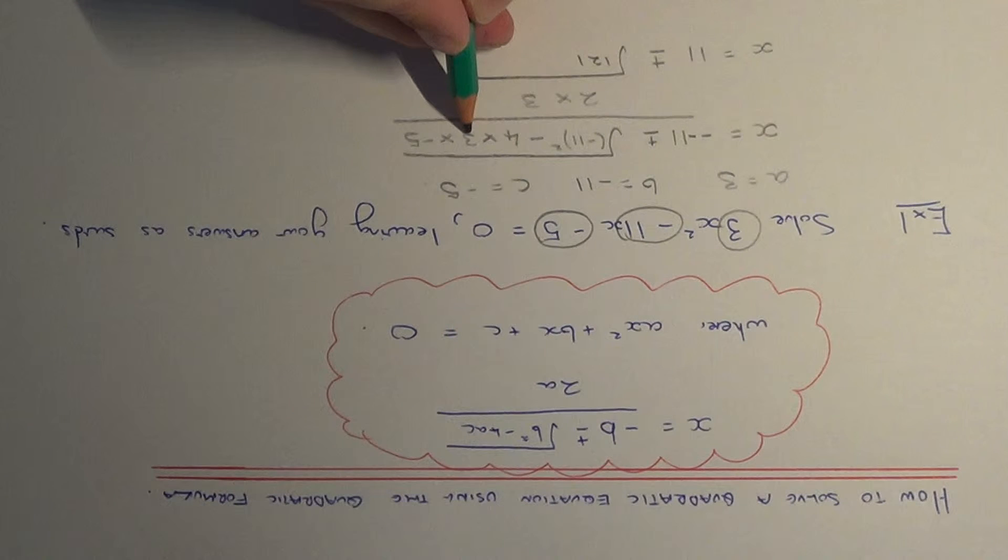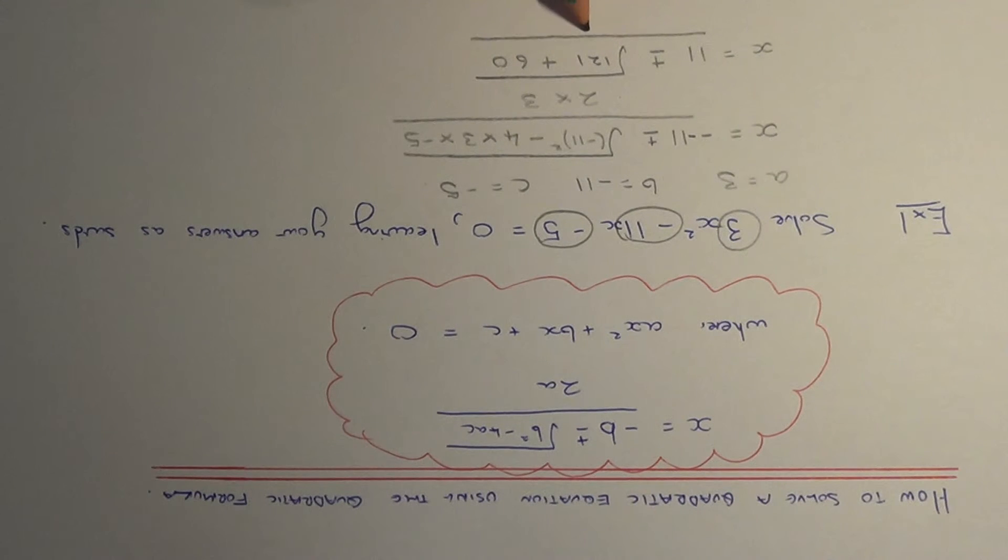Minus 4 times 3 is minus 12. Multiply by minus 5 is 60. And 2 times 3 is 6.